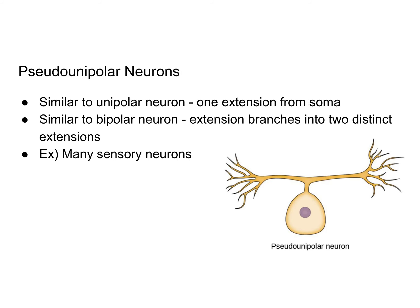The pseudounipolar neuron has characteristics similar to a unipolar neuron and a bipolar neuron. We have the soma, and then there's one cellular extension, and then it branches into two separate extensions. Many sensory neurons have this structure.